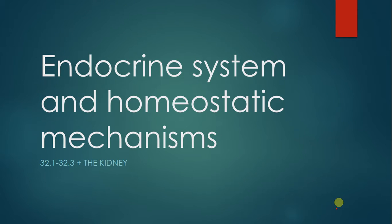This is the first video about animal form and function, and we're going to start with the endocrine system because it's a good branching-off point from what we were talking about with plants—how they respond to external and internal stimuli. The endocrine system in most mammals is a signal-laden system responsible for many different signalings that keep the organism in homeostasis.